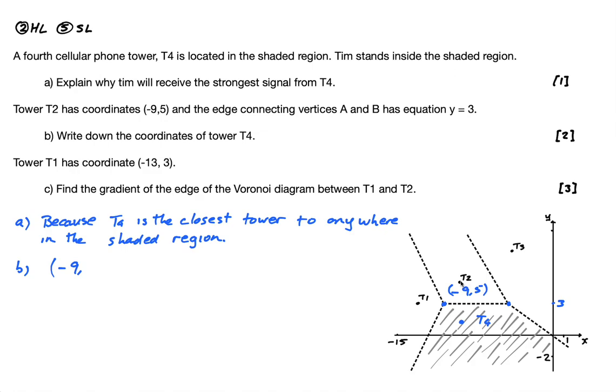And if this is 3, so we're at 5, this is 5, this is 3, what did I do to get from 5 to 3? I subtracted 2. So what am I going to do from 3? I'm going to subtract 2 here, so it's 1. So does that make sense, kind of intuitively? We're at minus 9, 5. This line is the bisector of these two. So if I have to go, if I'm at 5, down to 3, down to 1. So negative 9, 1 is the coordinates of T4.